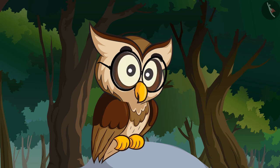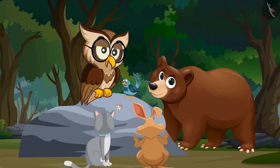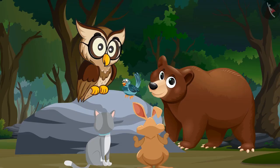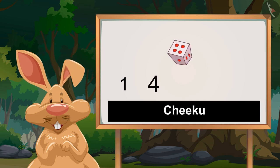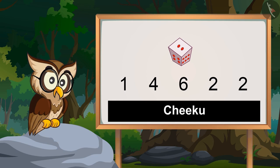Do you want to play a game? Yes! So kids, here is a dice. Now all of you will roll the dice five times. We will write down the numbers you get on rolling the die. Okay, I will roll first. Chiku got these numbers on the dice: one, four, six, two, two.